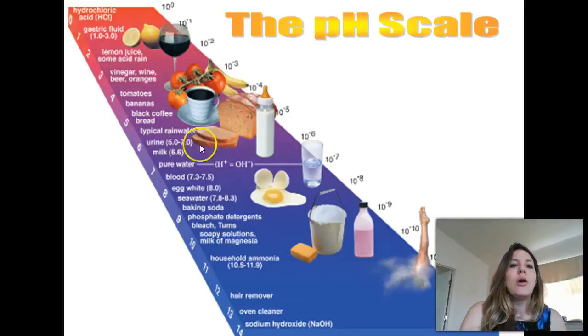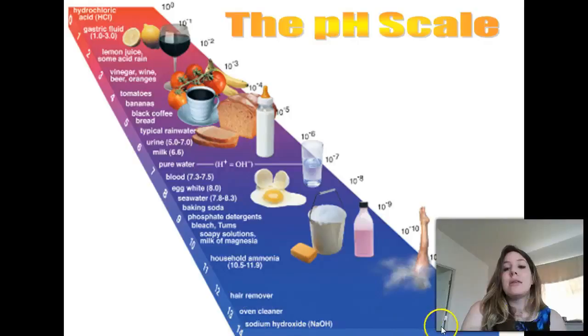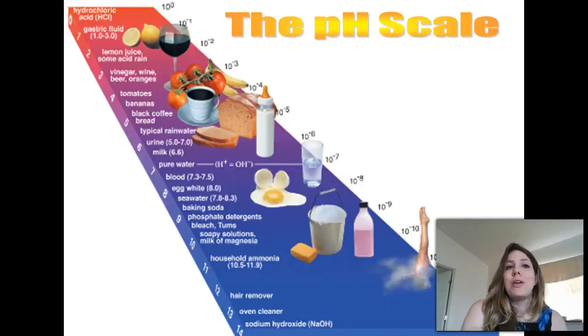Below 7, we have all the acidic things. And above 7 are the basic things. Here's your sodium hydroxide—it can be a pH of 14. When you're up here, these are nasty, nasty bases. And when you're down here, those are nasty, nasty acids. Here's your hydrochloric acid with a pH of 0 or a little bit over 0. Pretty amazing.